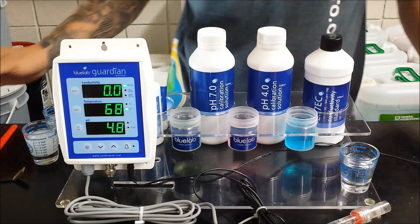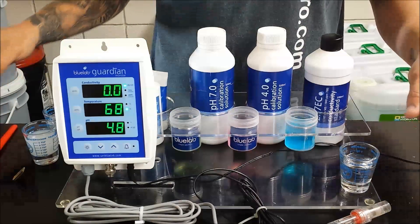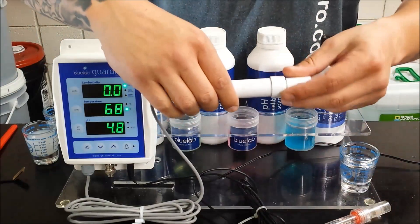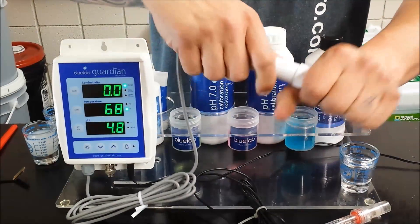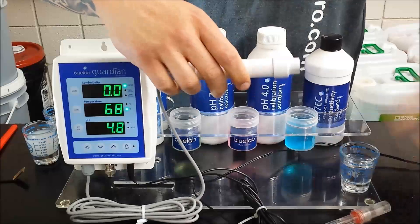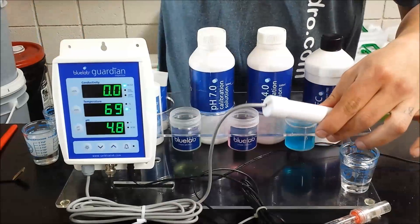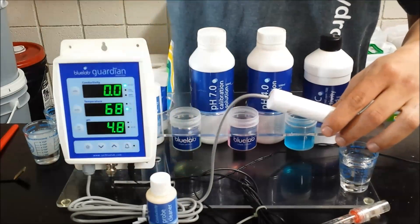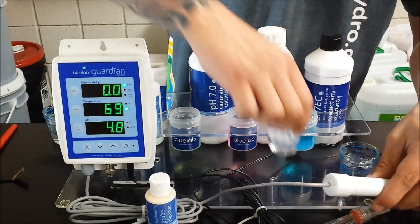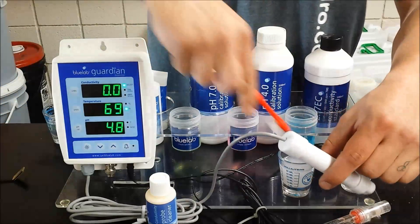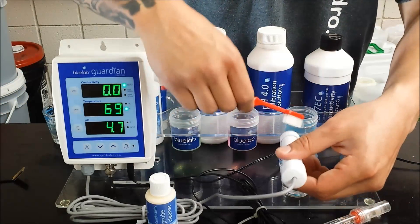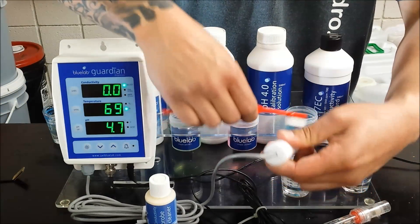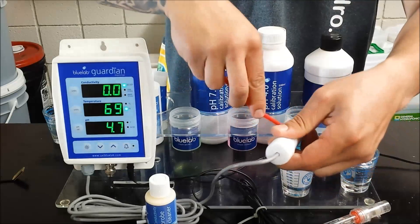First thing you want to do is make sure your probes are clean before calibration. Starting with the nutrient probe, you want to remove the protective guard. We have some Bluelab nutrient probe cleaner here mixed with some water to get our cleaning solution. You're going to want to scrub off any nutrient reservoir residue that can be on there.